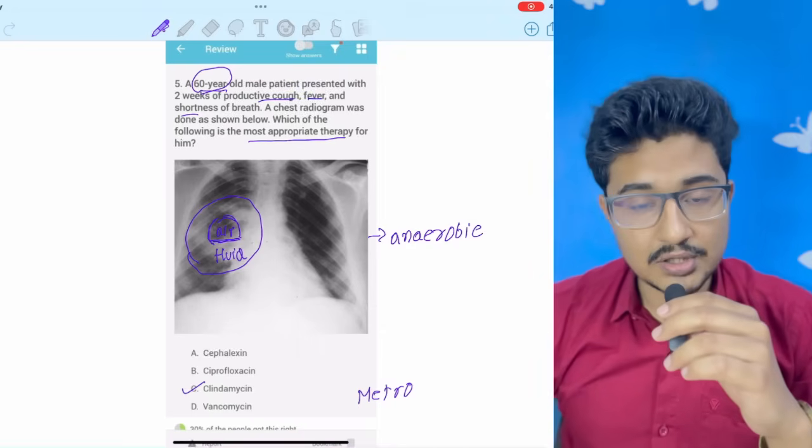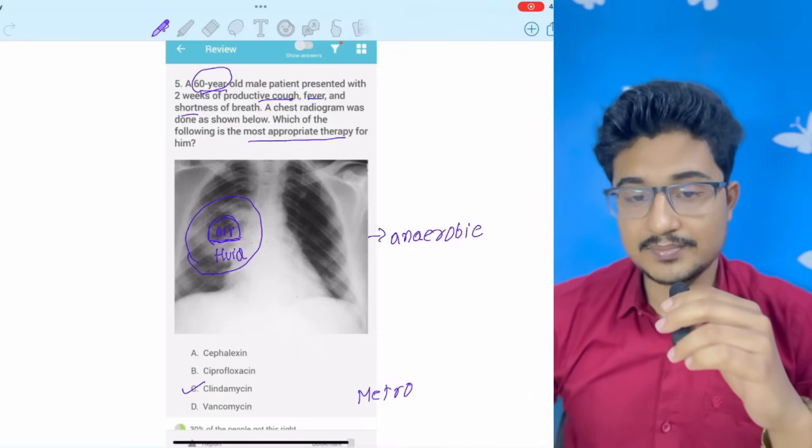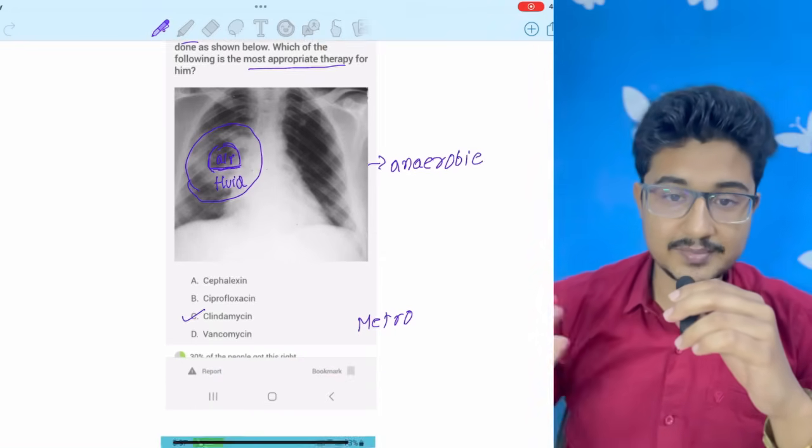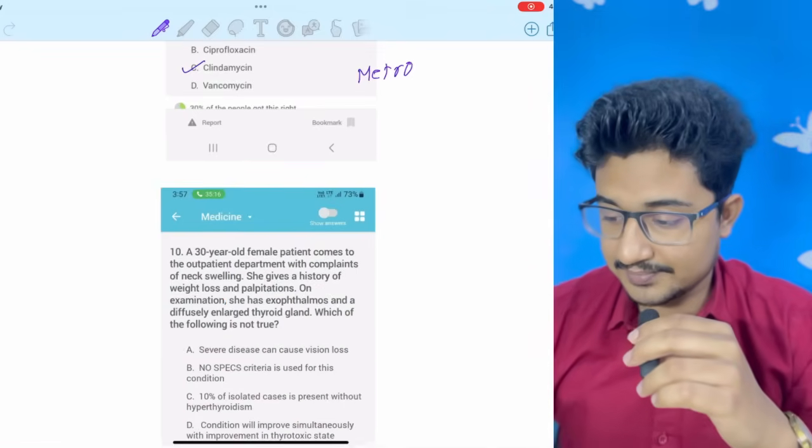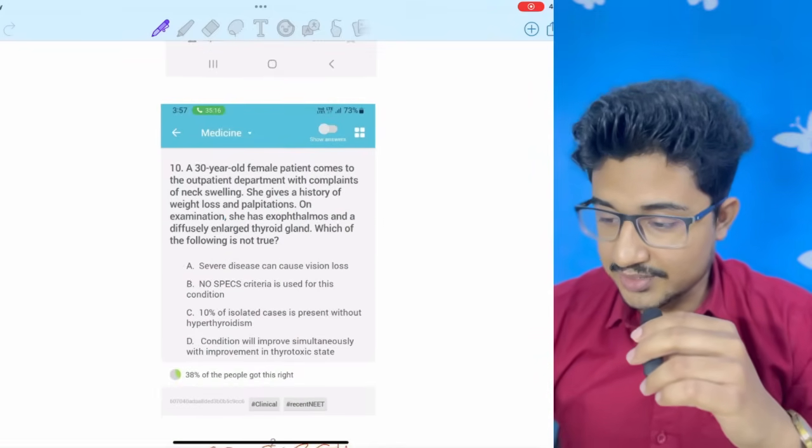So, in case of amoebiasis, the drug of choice is metronidazole. But in case of above the diaphragm, it is clindamycin.